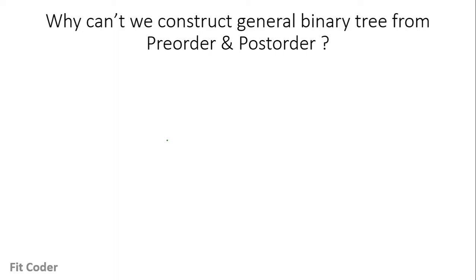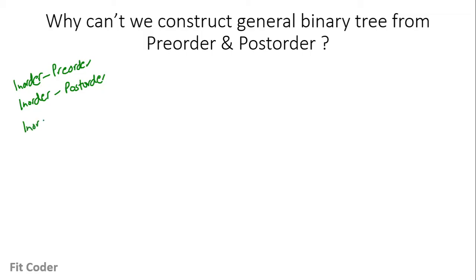So far we have seen that we can construct a general binary tree from in-order and pre-order, from in-order and post-order, and from in-order and level-order. But when pre-order and post-order are given, we cannot construct a general binary tree.